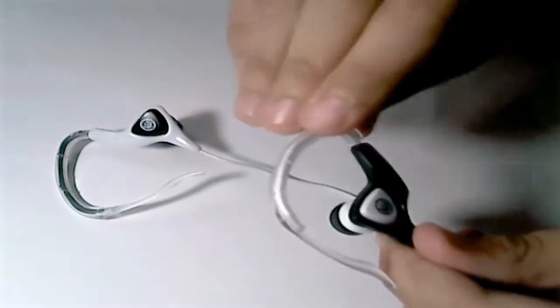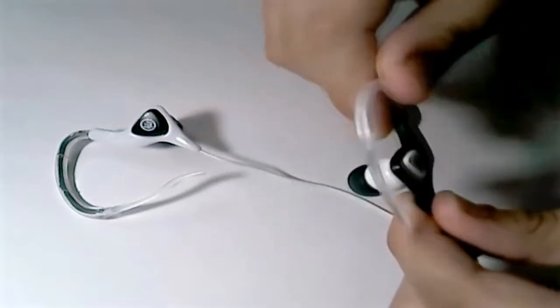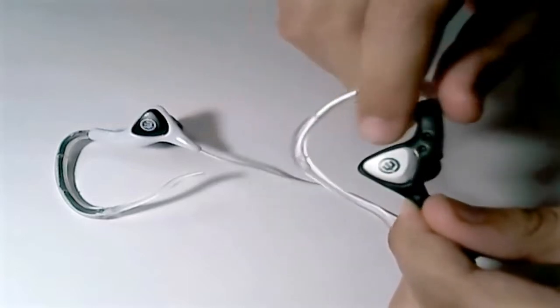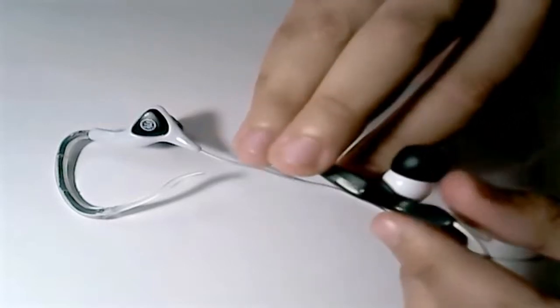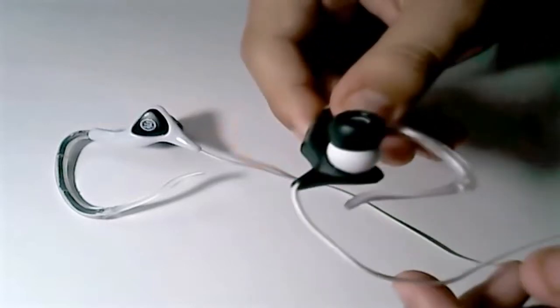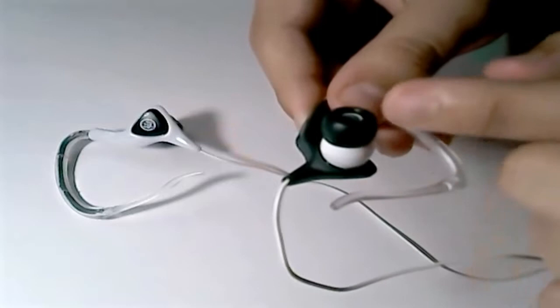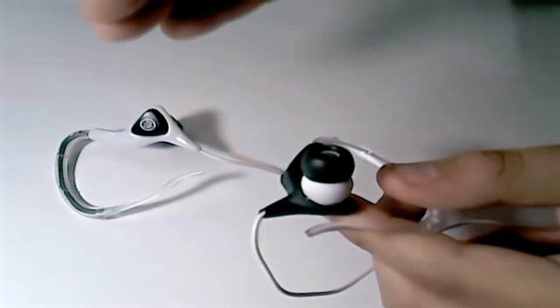It also can flip 360 degrees around the headphones, so that can be an advantage at some times. The ear tip piece itself is kind of angled, so it makes it fit a lot easier in your ear.